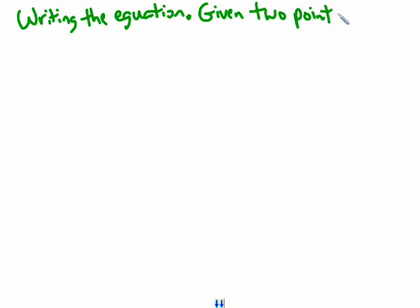What this means is they're going to give you two points that are on that line, so therefore you need to find out what the equation is for those two points. So let me give you an example.